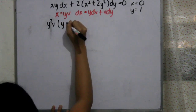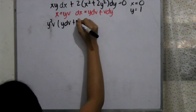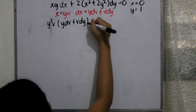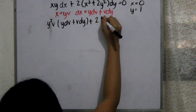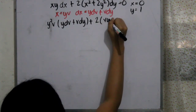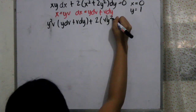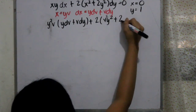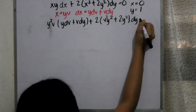We have to substitute all the x values with y·v, and dx with its differential, which is y·dv plus v·dy. What I did is just simply substitution of our values.